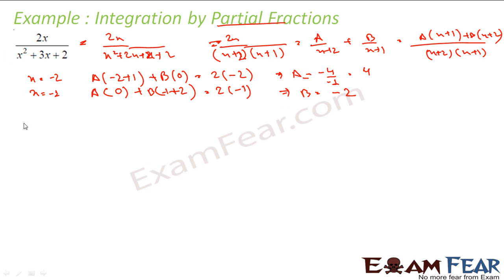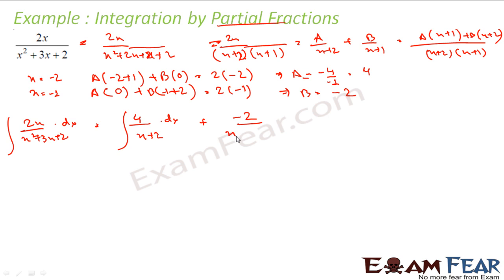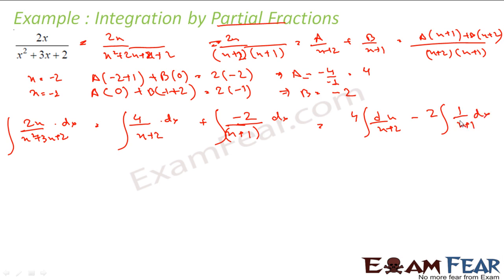So the integral of 2x/(x² + 3x + 2) dx becomes the integral of 4/(x + 2) dx plus the integral of −2/(x + 1) dx. This simplifies to 4·log|x + 2| − 2·log|x + 1| + C, noting that log is always taken with absolute value.